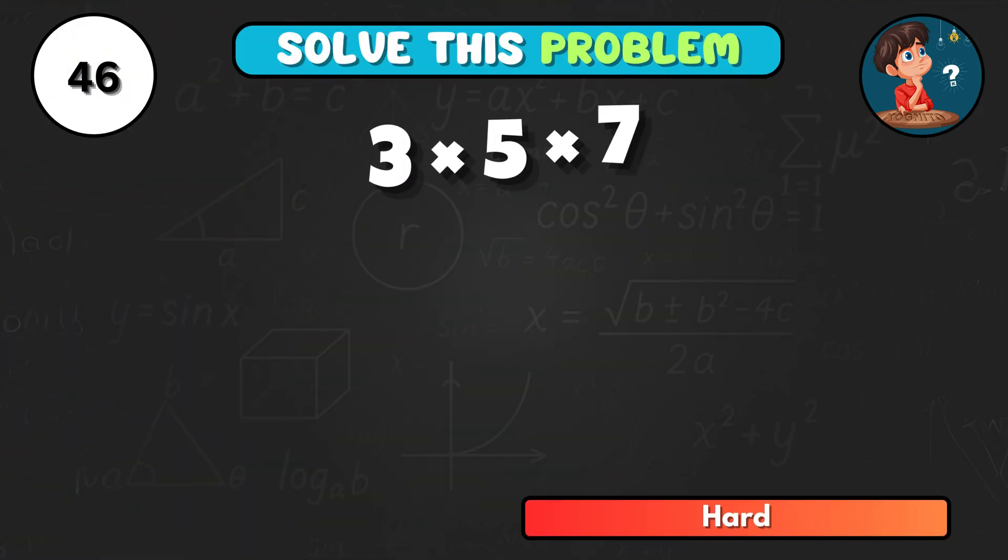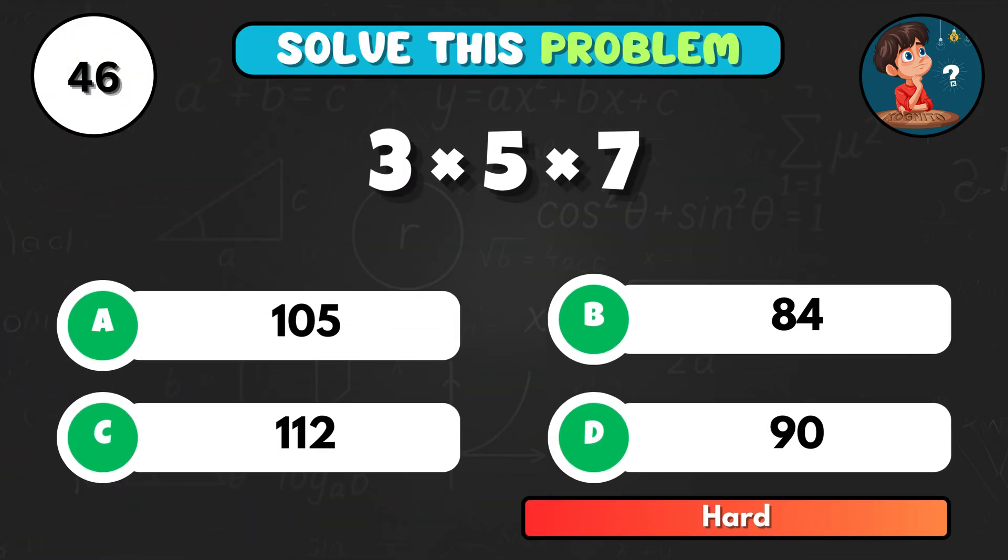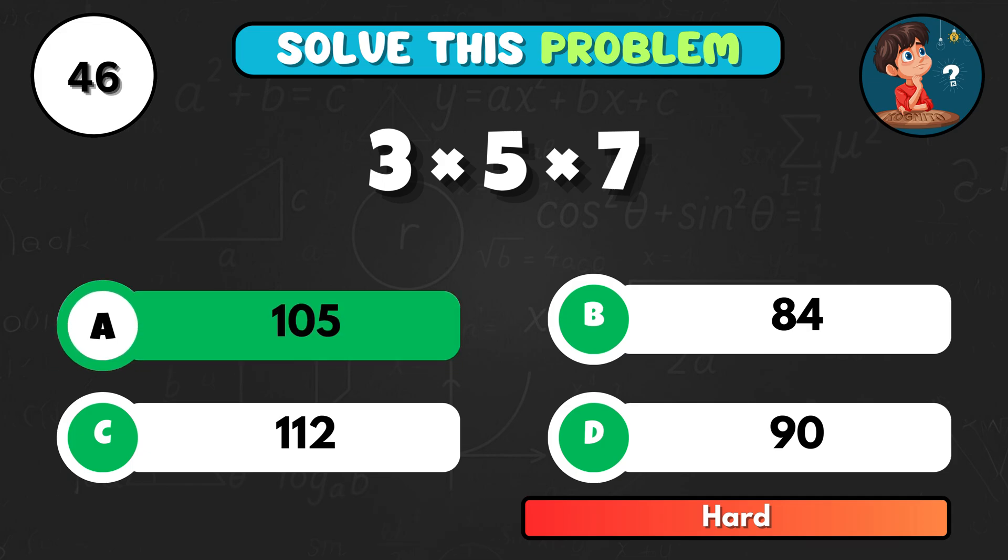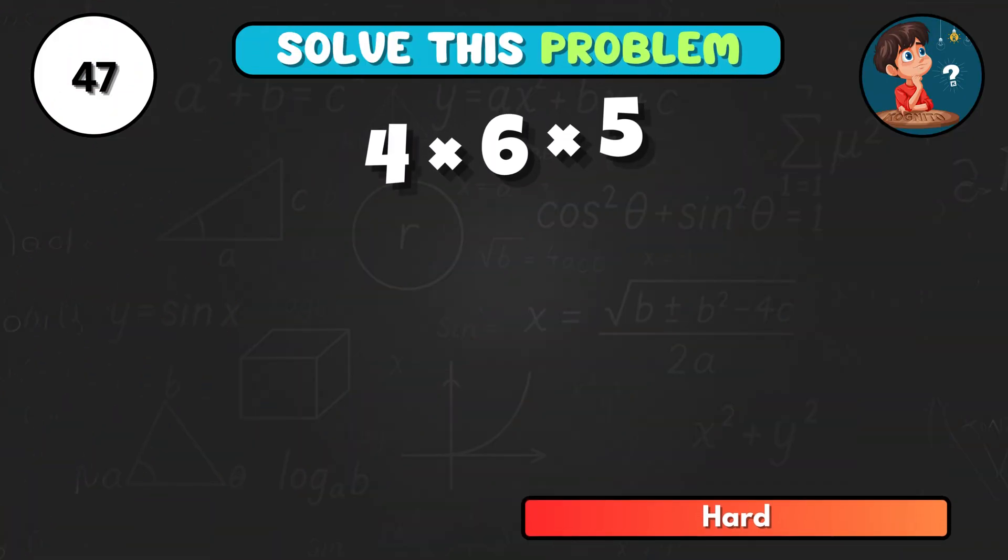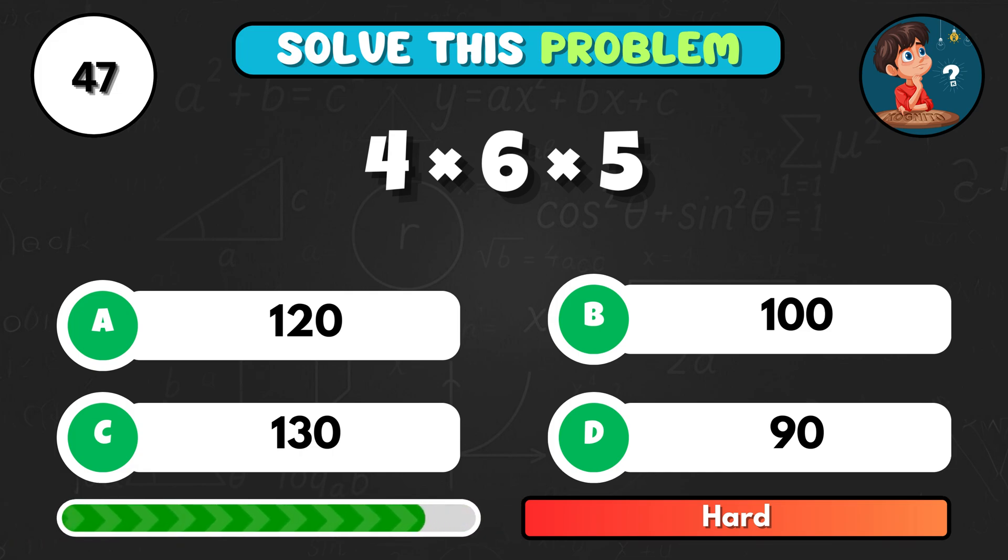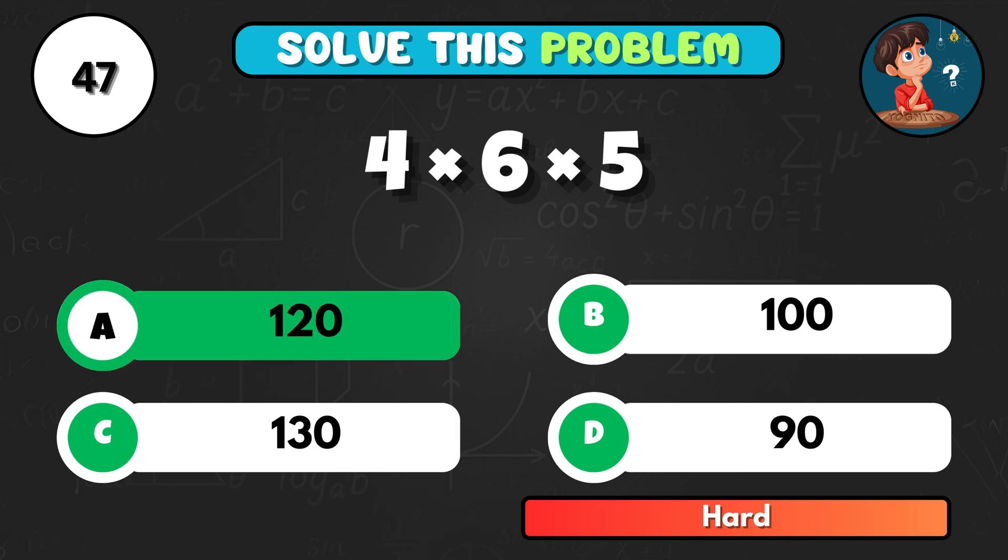Try this combo. 3 times 5 times 7. It makes A, 105. Three numbers again. 4 times 6 times 5. That's A, 120.